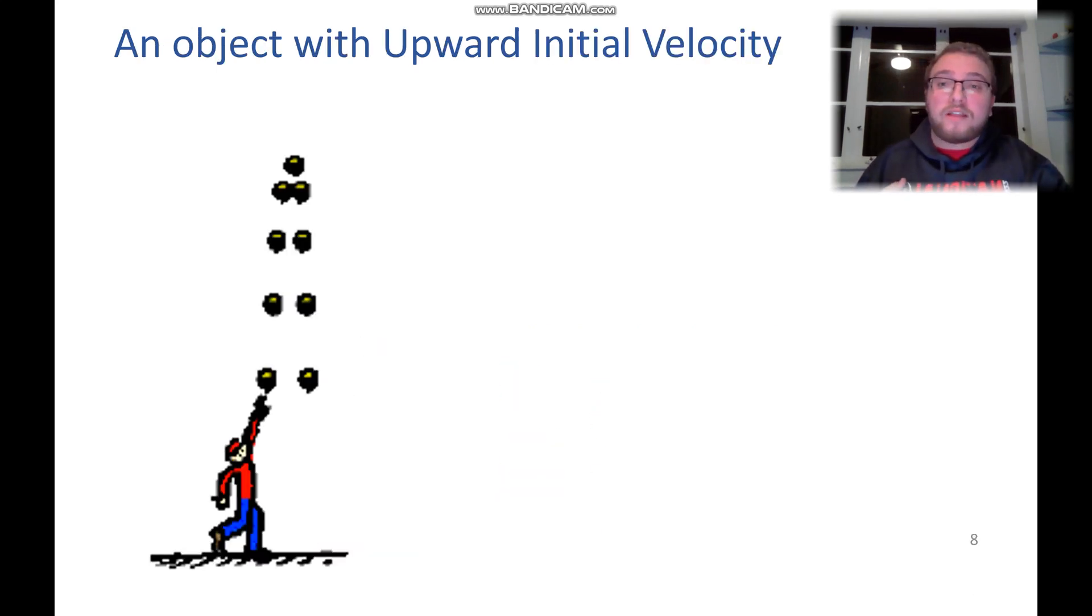If we want to look at the motion graph of an object with upward initial velocity or pop-up, we start with our velocity vector v0, our initial velocity.